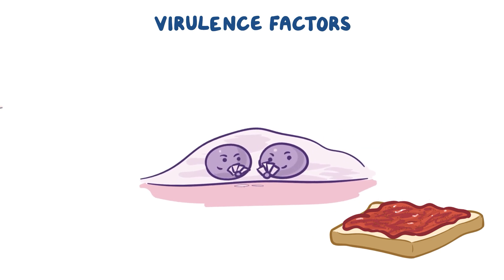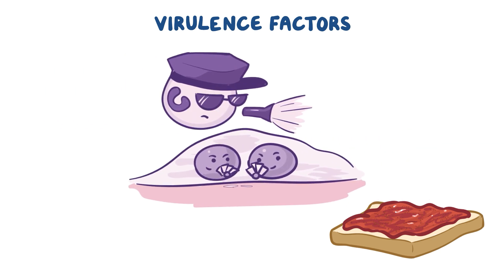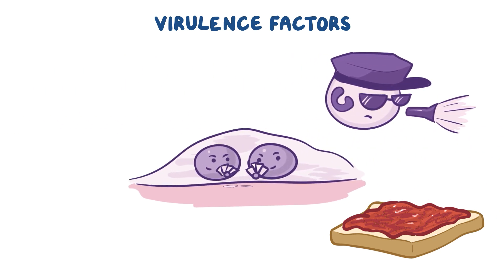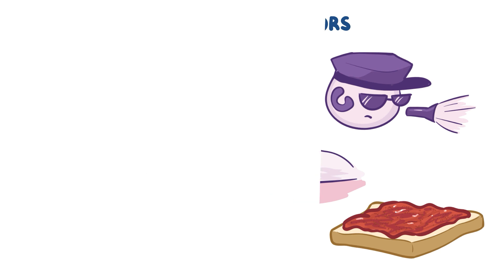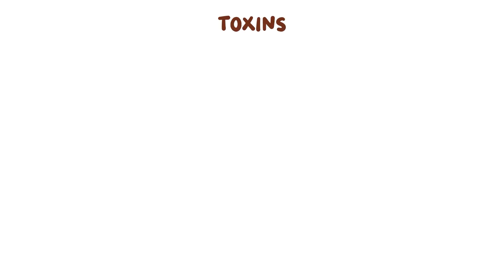The bacteria in the biofilm hide from the host's immune system and antibiotics, and even exchange resistance genes. Sneaky. As if that wasn't enough, strep pneumoniae also produces toxins, and the most important ones are IgA protease and pneumolysin.